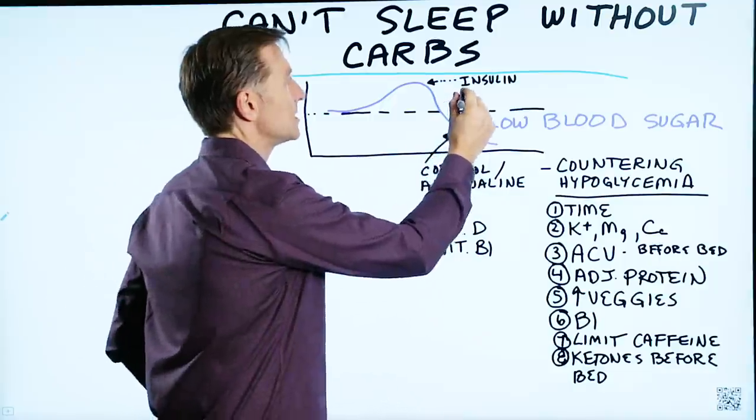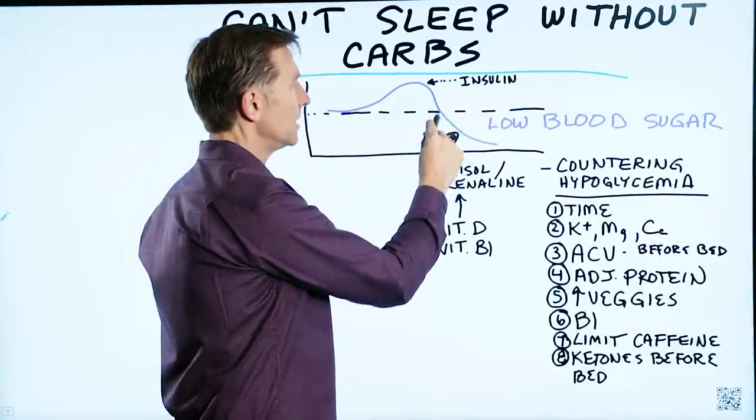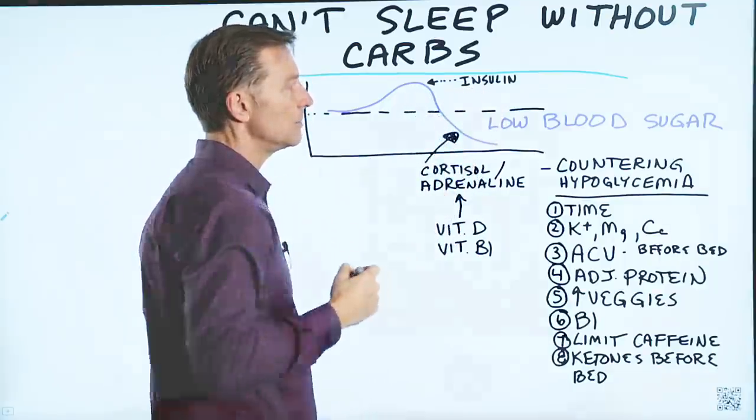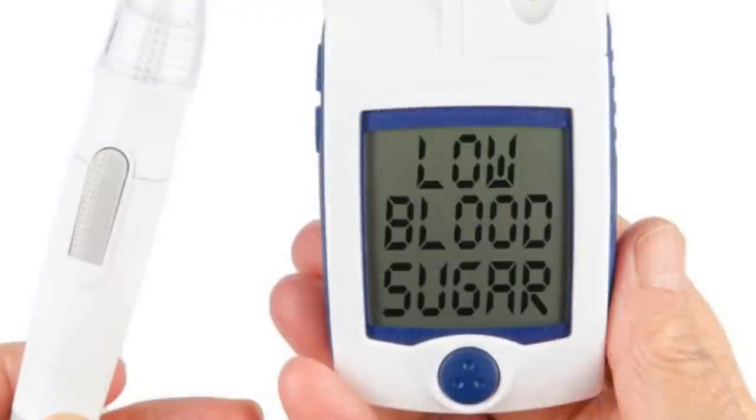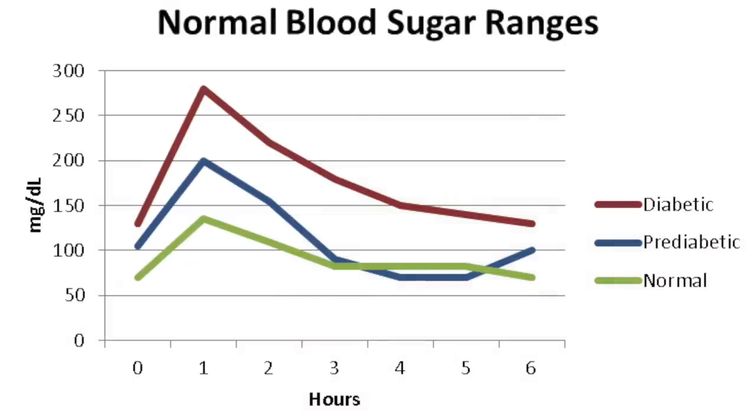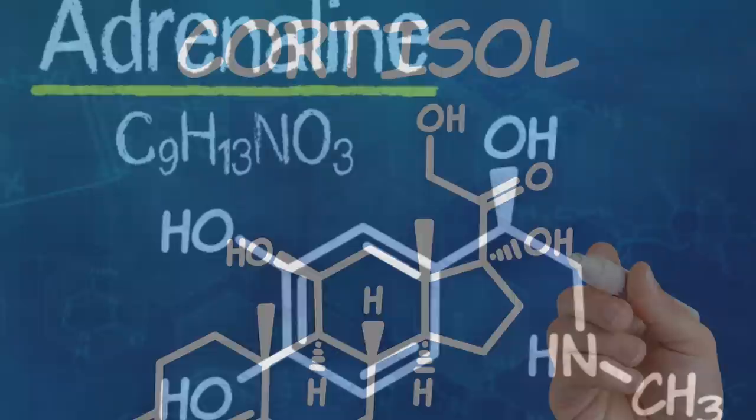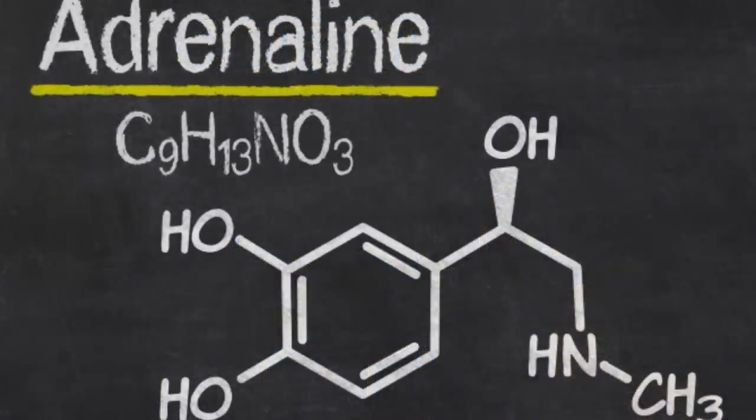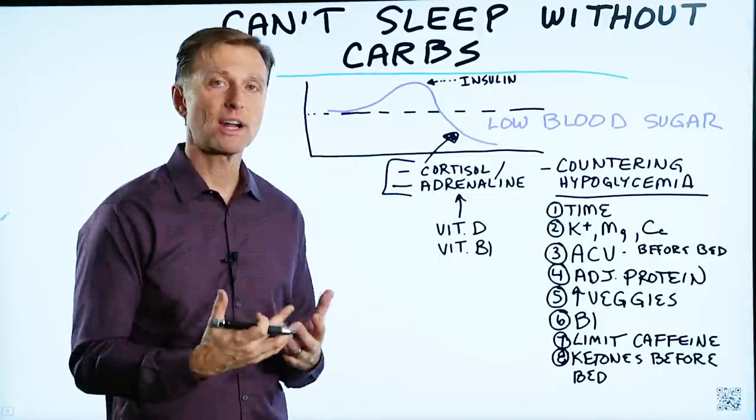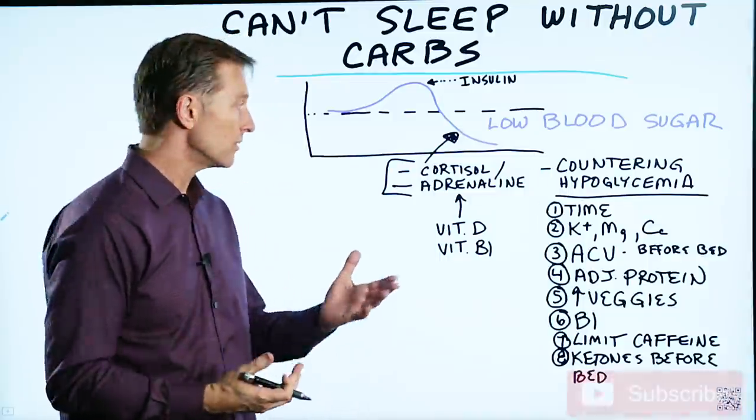So that higher amount of insulin could actually push the blood sugars down too low in the middle of the night. Now with low blood sugars, you have counter-hormones that keep your blood sugars from going down too low. The two main ones are cortisol and adrenaline, and these are from the adrenal. Try to sleep when you have adrenaline flowing through your bloodstream or even cortisol.